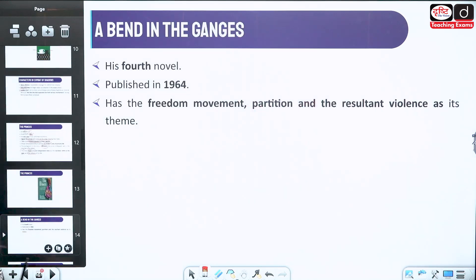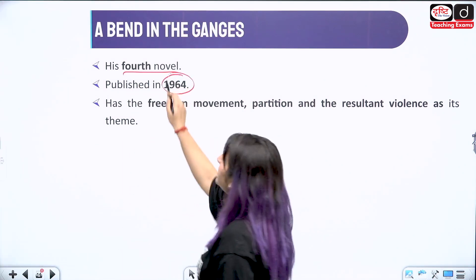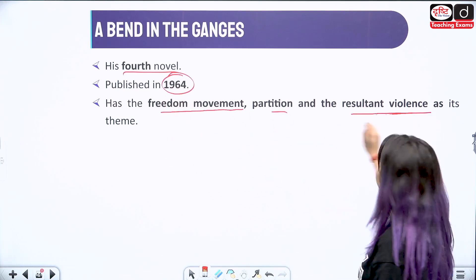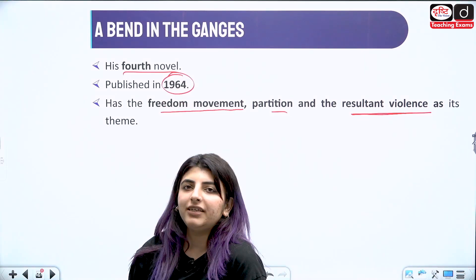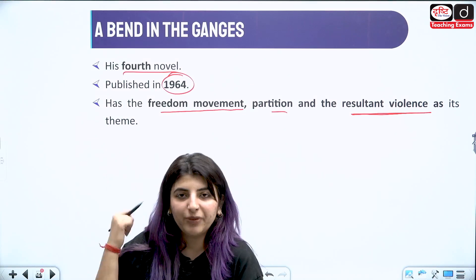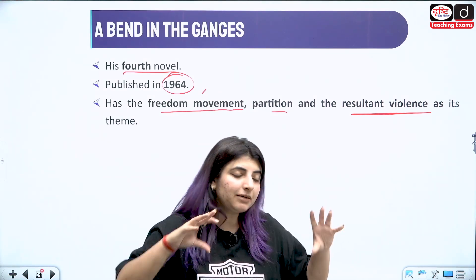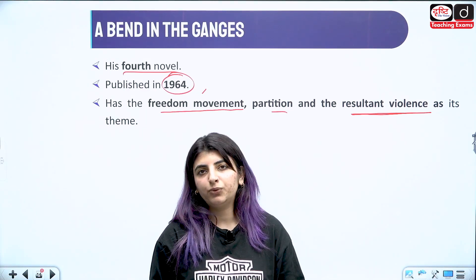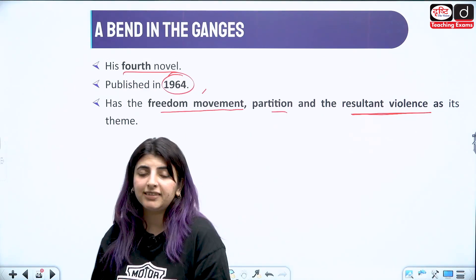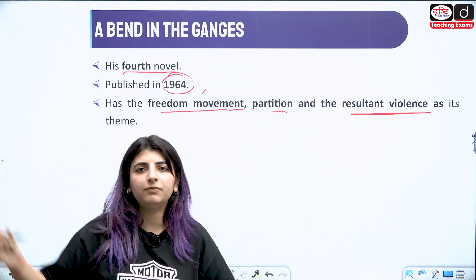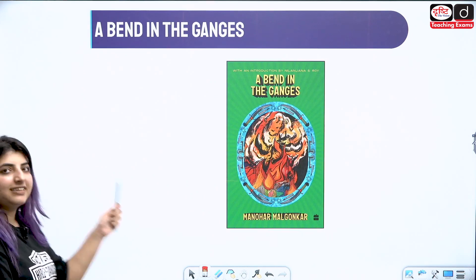Then we have A Bend in the Ganges — Ganges being the River Ganga. His fourth novel, published in 1964, is about the freedom movement. He also talks about all the things that a normal person has to go through — the violence that a man has to suffer during these chaotic times where Hindus are fighting against Muslims, and there is chaos everywhere because partition is going to happen.